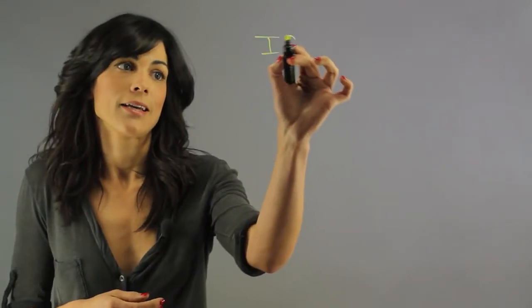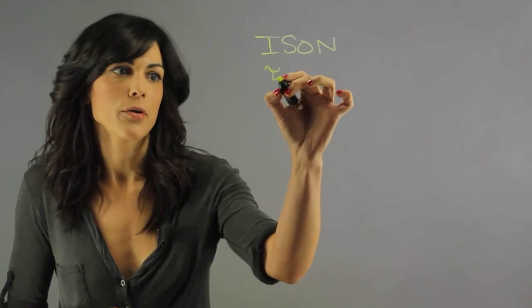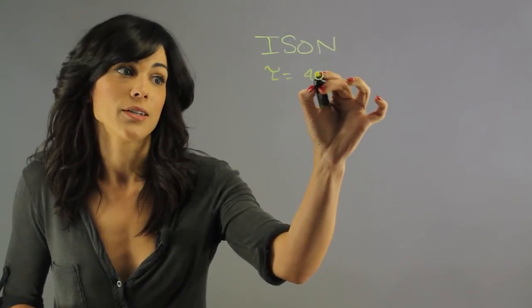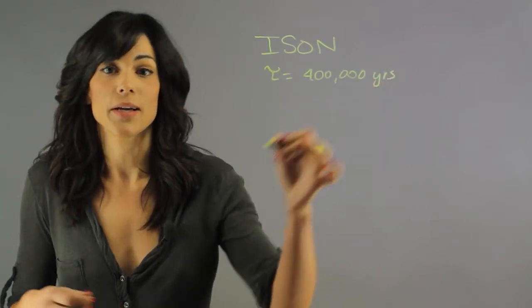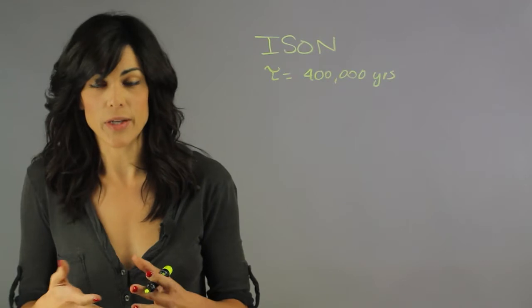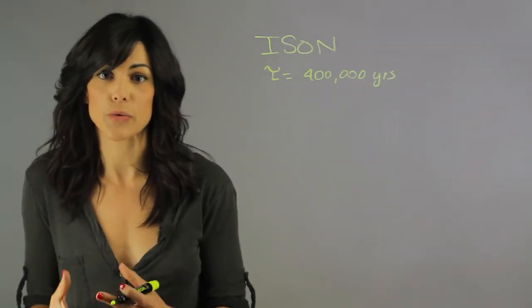So Comet ISON has kind of a sad story. It had a period of 400,000 years, meaning that it hasn't interacted with much. Comet ISON was like a great opportunity to look at the primordial gases from the beginning of the solar system.